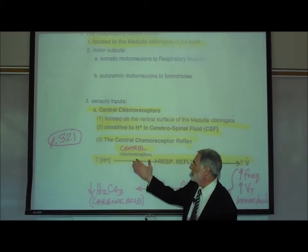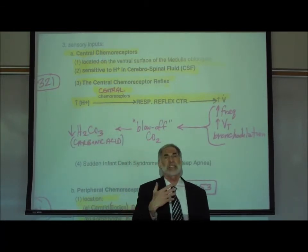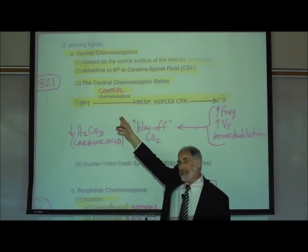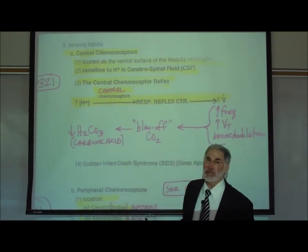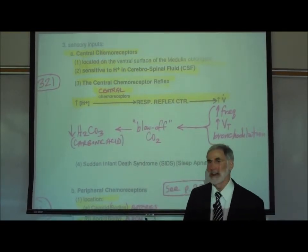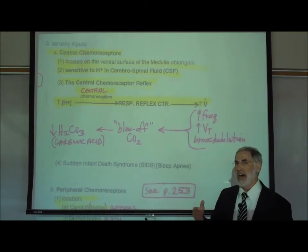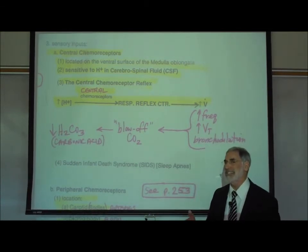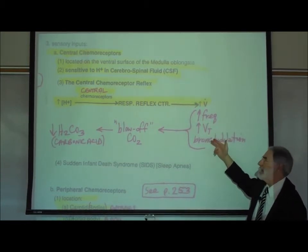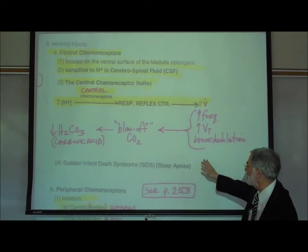We now describe the central chemoreceptor reflex. Whenever there is an increase in hydrogen ion level — increased acidity of the body fluids, especially the cerebrospinal fluid — the central chemoreceptors inform the respiratory reflex center in the medulla oblongata. In response, it activates somatic motor neurons in the phrenic and intercostal nerves to the diaphragm and intercostal muscles, increasing the frequency and tidal volume of breathing, and activates sympathetic autonomic motor neurons to cause bronchodilation.